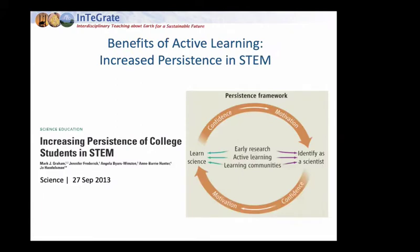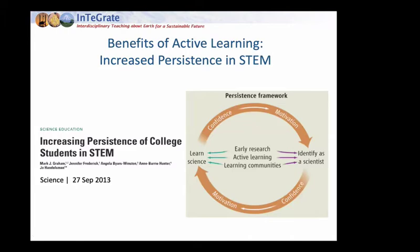Another benefit of active learning is increased persistence in STEM. The authors of this work created a persistence framework centered around active learning along with early research and learning communities. They felt active learning, especially in introductory courses, is a way for students to not only learn science but also grow their identity as a scientist. Within that framework, we can build students' confidence and their motivation — especially important in introductory courses where we can inspire students to become majors or become advocates in earth science.